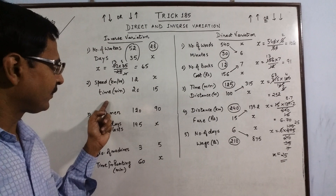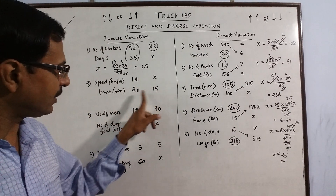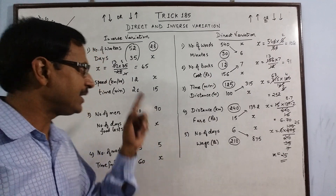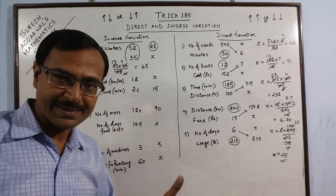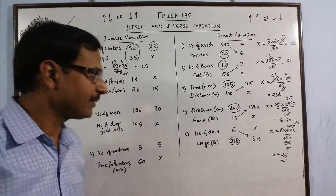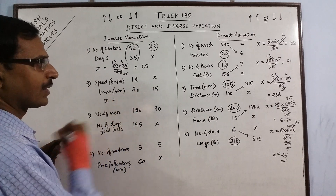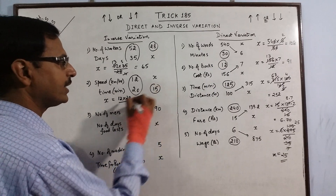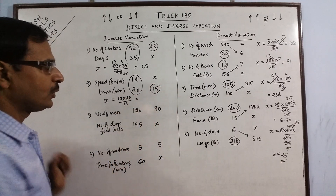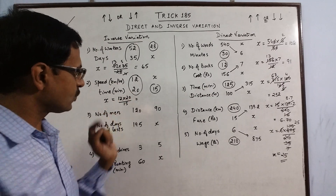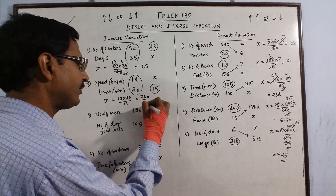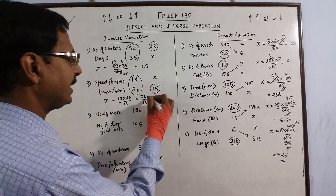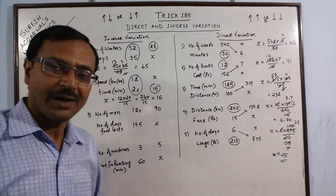Likewise, for speed and time: here the time is decreasing. When will the time decrease? When the speed increases. If you increase the speed, the time will decrease — so this is inverse variation again. Multiply the two known values one below the other and divide by the third known quantity 15. So 12 into 20 is 240, divided by 15. This gives exactly 16. So 16 is the answer.